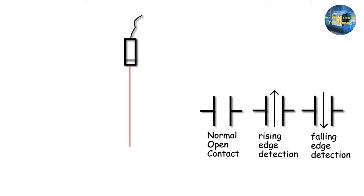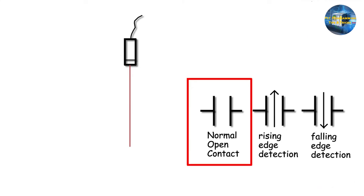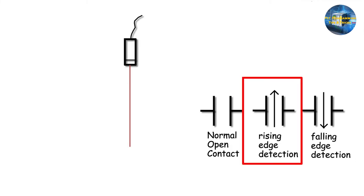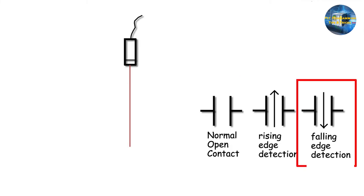We can use PLC inputs in several ways in PLC programming. The most common are: normally open, normally closed, rising edge detection, and falling edge detection.